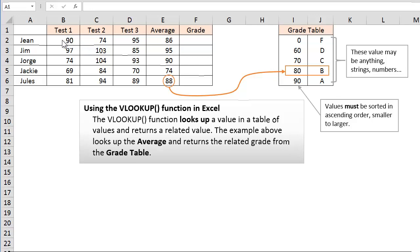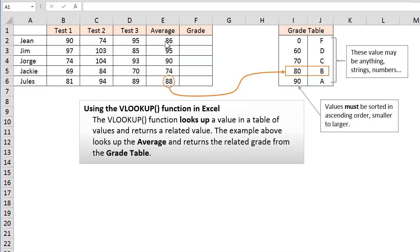In this example we have a number of students who have three test scores and we are going to average those test scores. And then we are going to look up their grades based on their test scores. And the grades follow a very simple grading schedule.